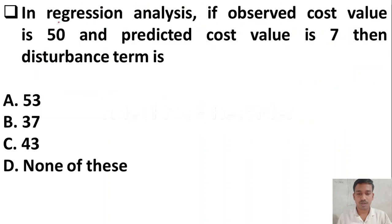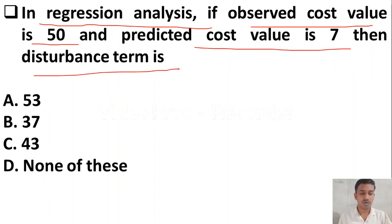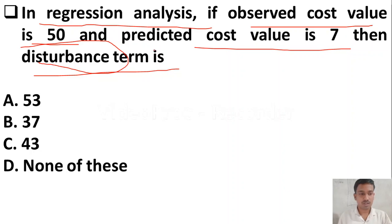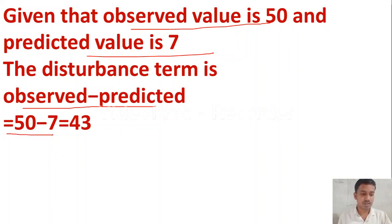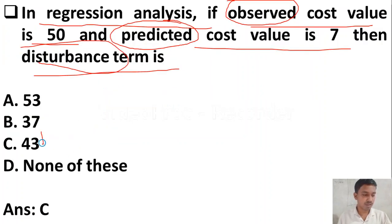The next question: in regression analysis, if the observed value is 50 and the predicted value is 7, then the disturbance term will be — option A 53, option B 37, option C 43, option D none of the above. The disturbance term equals observed value minus predicted value, that is 50 minus 7 equals 43. So option C, 43, is the right answer. If you don't know this formula, even a simple question like this becomes difficult.